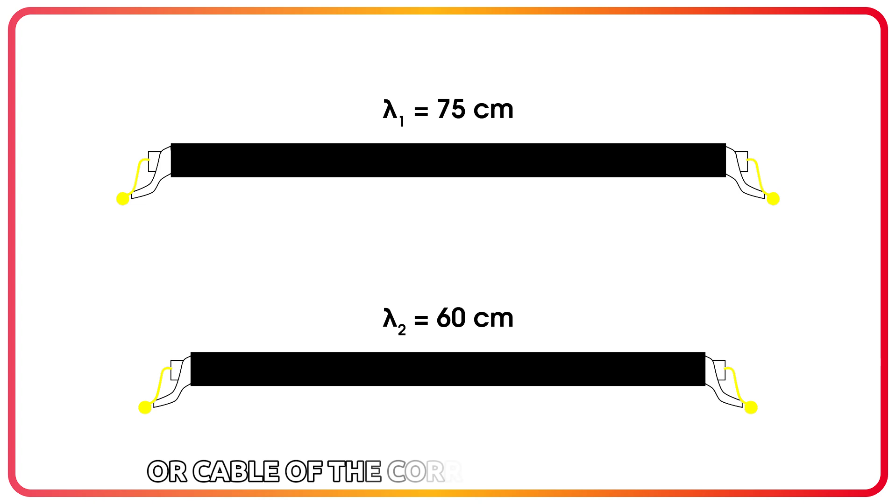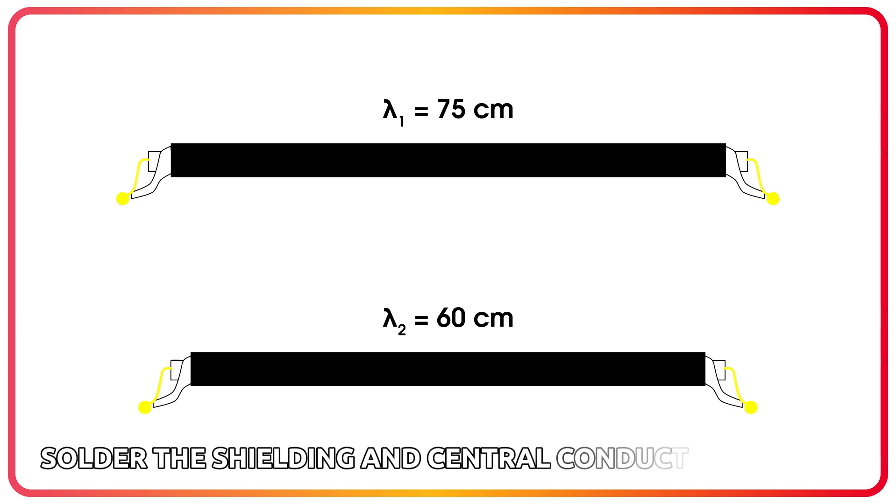Cut pieces of wire or cable of the corresponding lengths. If using a coaxial cable, solder the shielding and central conductor at each end.